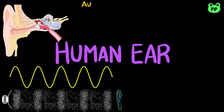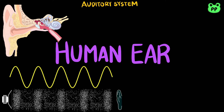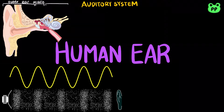Hearing is the perception of sound in the brain from the vibration of airwaves, which is received and transduced by our ear. The human ear consists of three segments: the outer ear, the middle ear, and the inner ear.